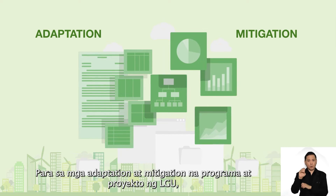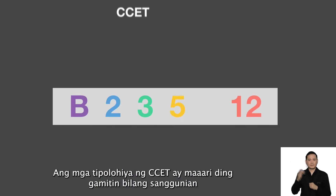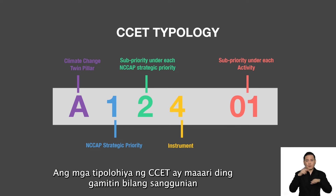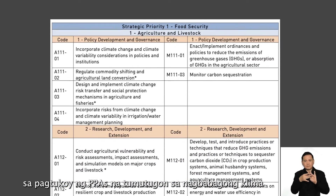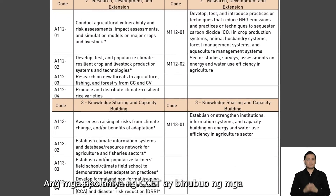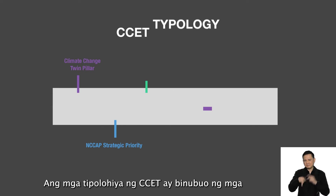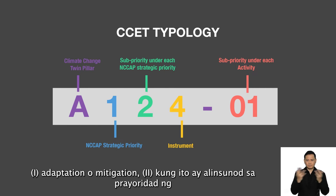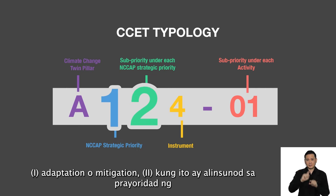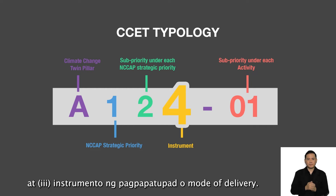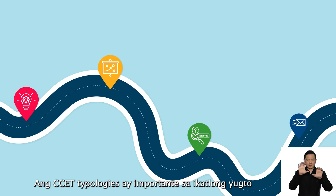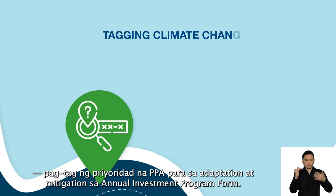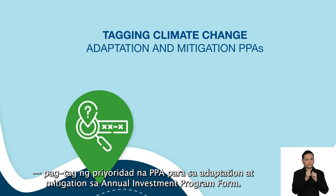For both adaptation and mitigation strategies, CCE-T typologies may also be used as references for the purpose of identifying climate-responsive PPAs. The CCE-T typologies comprise alphanumeric characters to characterize your PPA as: 1. Adaptation or mitigation, 2. Alignment to the strategic priorities of the National Climate Change Action Plan, and 3. Mode of delivery. The typologies are helpful in the third stage: tagging prioritized climate change adaptation and mitigation PPAs in the Annual Investment Program form.